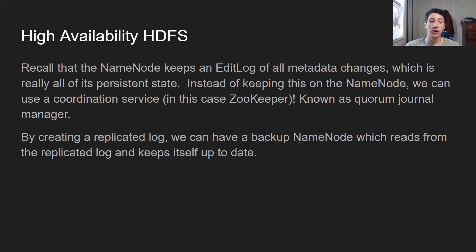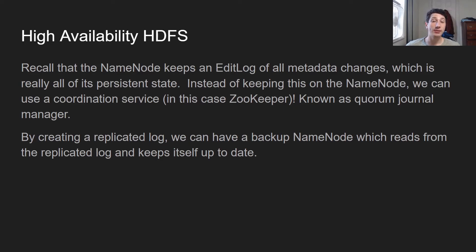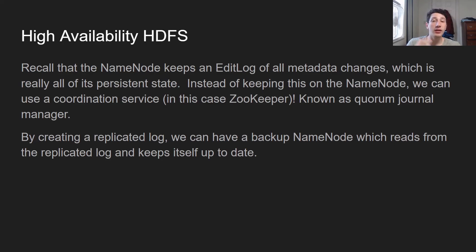After we have this replicated log, we can now have a second instance of a name node — just call it the backup. All it's going to do is read that replicated log and keep its state up to date in the same way the primary name node does. By using this coordination service, we're able to keep a secondary name node relatively up to date. So in the event the first one goes down, the coordination service also holds a distributed lock — the first one goes down, it'll no longer hold that distributed log, and then the second one can grab the distributed log to basically say: I'm the leader now, I am going to be the name node.